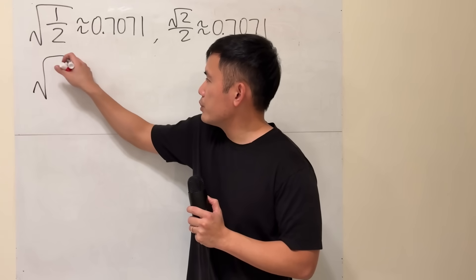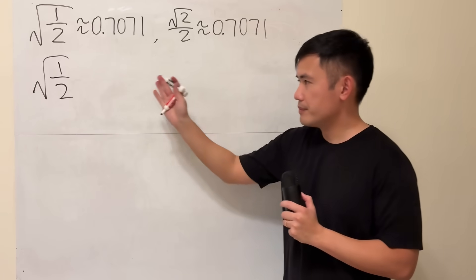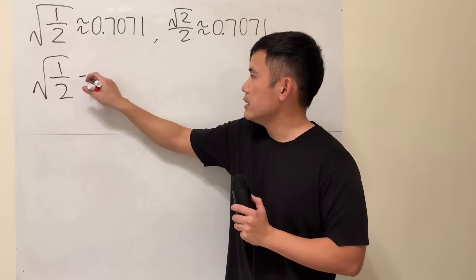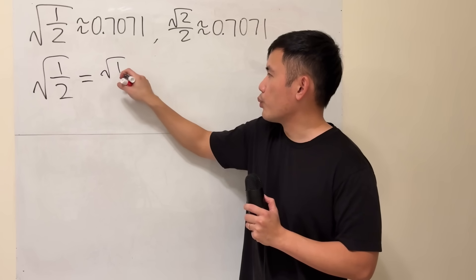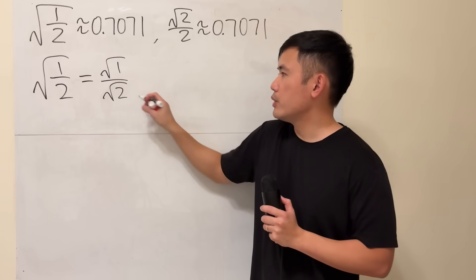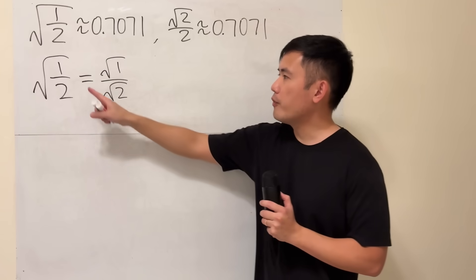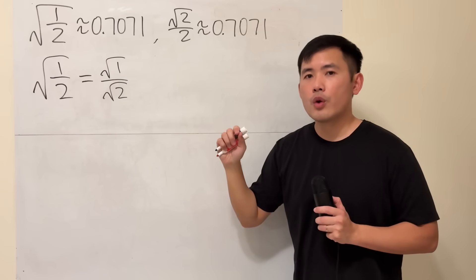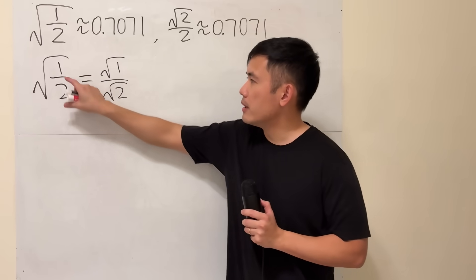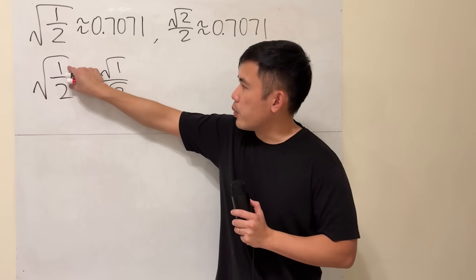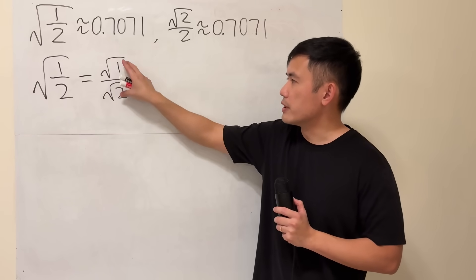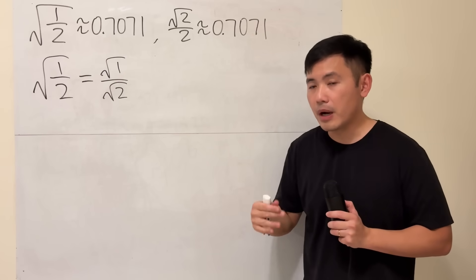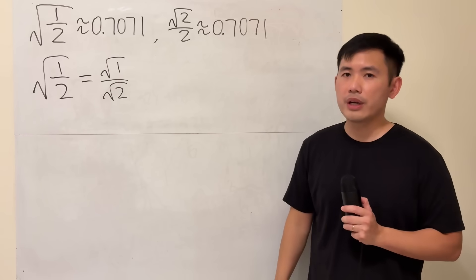If you start with square root of 1 over 2, what we can do is this is equal to square root of 1 over square root of 2. Because both the 1 and 2 are positive, so this is totally okay. When you have a square root of a quotient, it's the same as the quotient of the square roots, especially when the top and bottom are both positive.